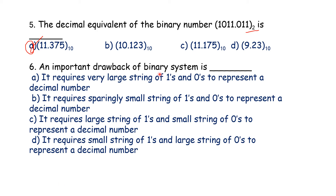An important drawback of the binary system is that it requires very large strings of 1s and 0s. That is the most vital drawback of the binary system. So option A — very large string of 1s and 0s — is the correct answer.